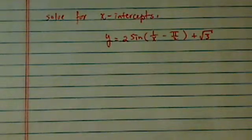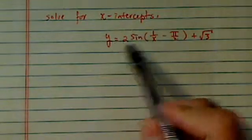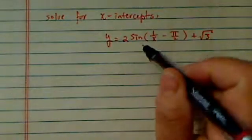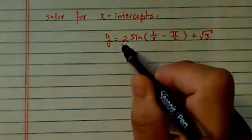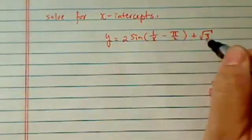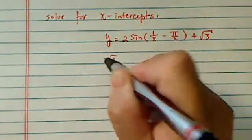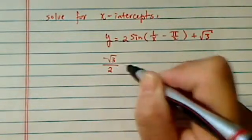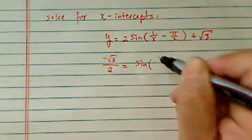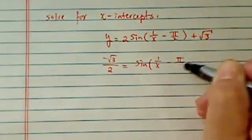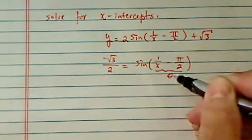Hi there. Thank you for watching this clip on solving a trig equation. The first thing we're going to do is set up the equation. We move minus 3 radical 3 over and divide it by 2. We'll have sine of 1 over x equal to — let's call this theta.